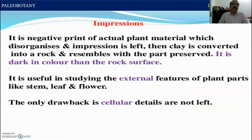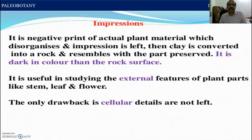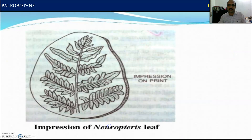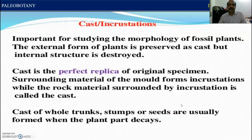Impression — it is a negative print of actual plant material. When the plant disintegrated, an impression is left, then clay is converted into rock resembling the part preserved. It is dark in colour than the rock surface. It is useful in studying the external features of plant parts like stem, leaf, and flowering parts. The only drawback is that cellular details are not preserved. This is the impression of a Neuropteris leaf.